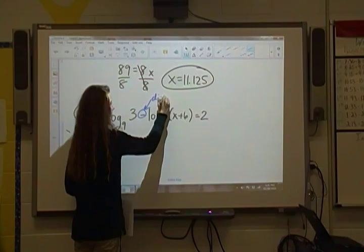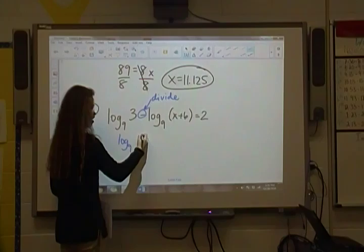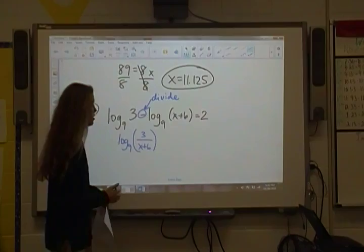So when we do this, we're going to combine these log base 9 of 3 over x plus 6. Remember, that just means division. Subtraction means division. Equal to 2.